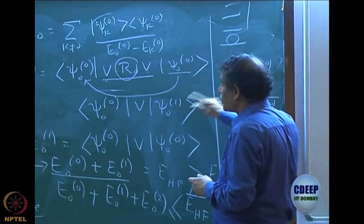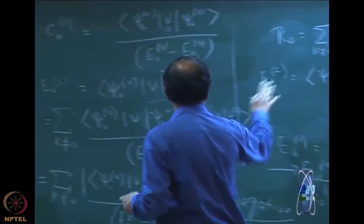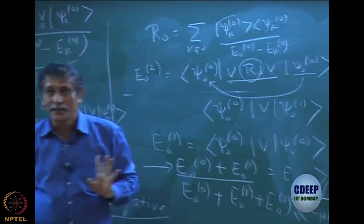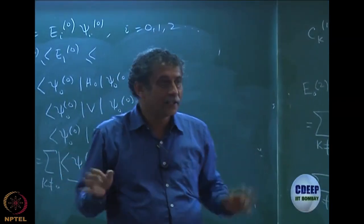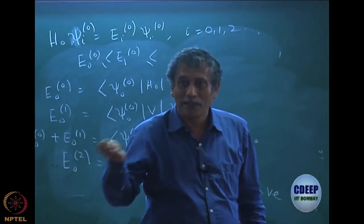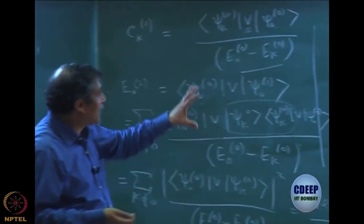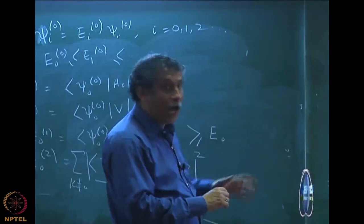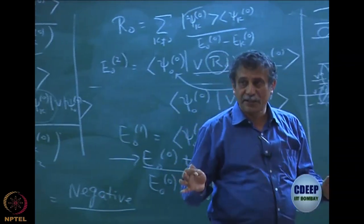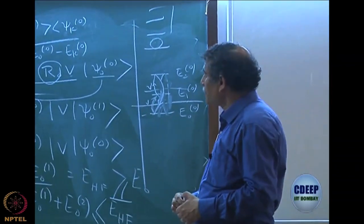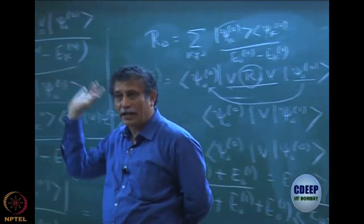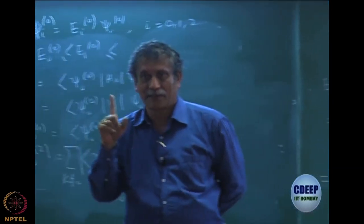I think today I will stop here. Tomorrow I will actually put H0 as the sum of Fock operators and find out what are the ψk0s. Then calculate this formula. When I do this, I will require the final Slater rule — the matrix element of ψ00 Hartree-Fock with a doubly excited determinant. That will come in. So tomorrow's class, I will start with that final Slater rule, simply write the expression, understand it, and then go back to complete the MP2 expression.